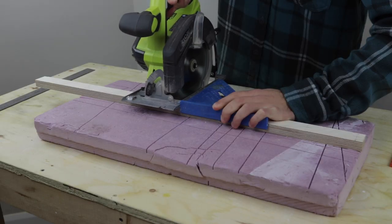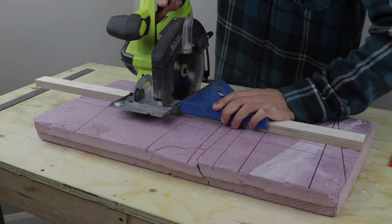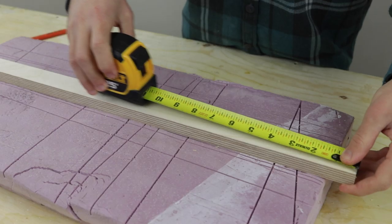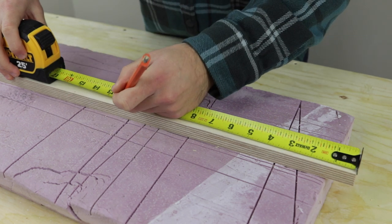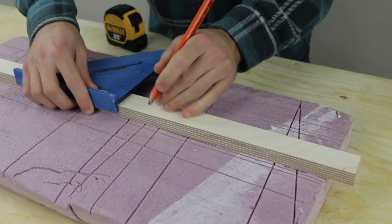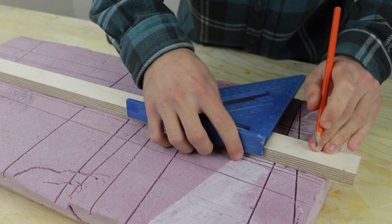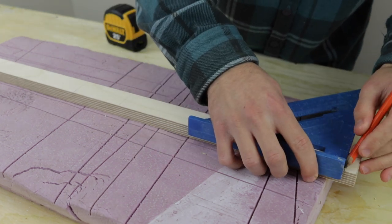While the adhesive cured, I trimmed down a small strip of plywood to form the arm of the lamp. Then I marked out positions for holes where the conduit and cord would pass through the wood. I thought it would be cool to create a weaving pattern where the cord passes through the top and bottom of the wooden arm.